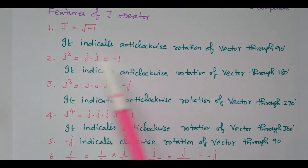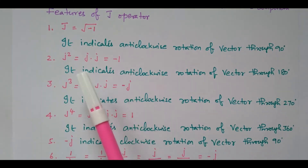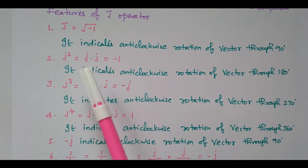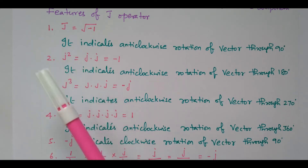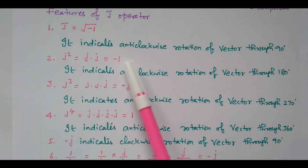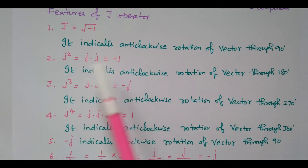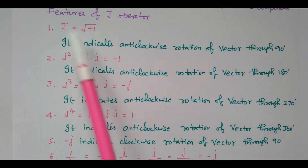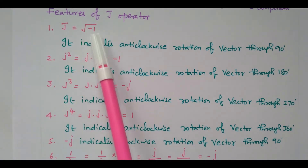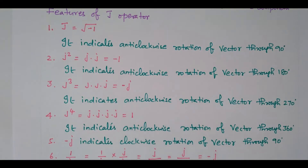That is, J into J is minus 1. So during the problem, we can use two values: J squared equal to minus 1, or J equal to square root of minus 1.